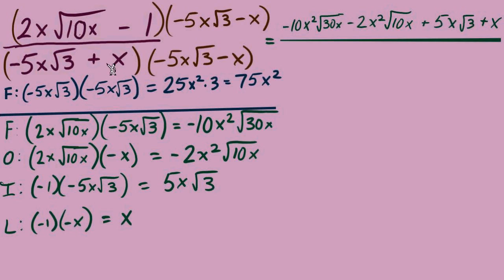With conjugates, like we say, outer and inner will cancel. We're going to move right to the last. Positive x times -x is -x². Now, do we have like terms there? We do. They both have x². So we're adding the coefficients, 75 with -1x² equals 74x².